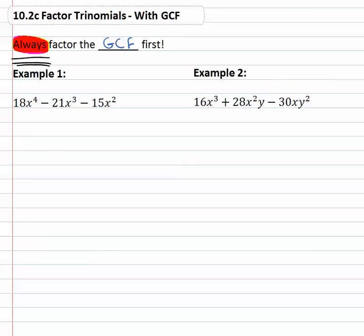18, 21 and 15 are each divisible by 3. You'll also notice that they all have x's in common. They have at least two of them. GCFs take the lowest exponent. And when we factor out 3x^2 from 18x^4, we get 6x^2 - 7x - 5.